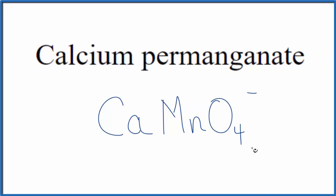So we have a metal, and then we have this polyatomic ion. This is an ionic compound. We need to think about the charge, the ionic charge, when we write the formula for calcium permanganate.